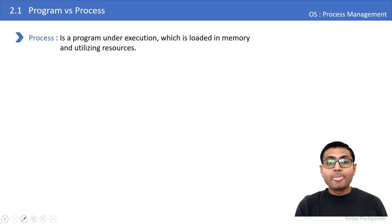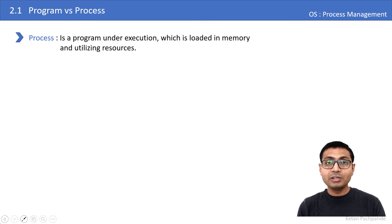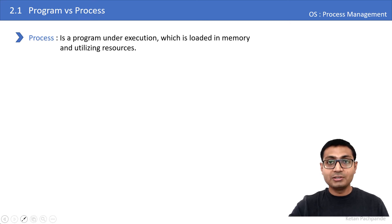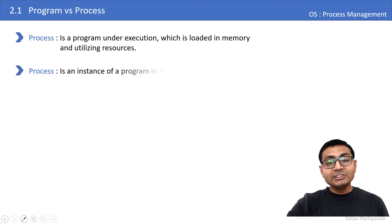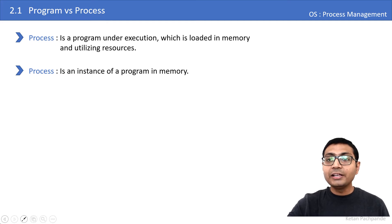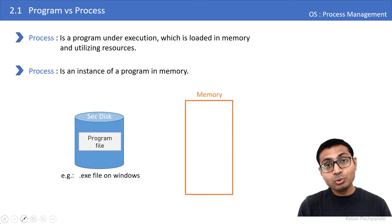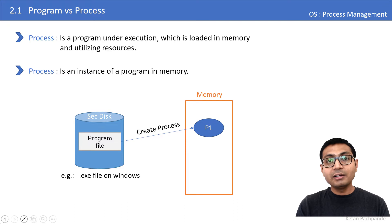A process is the program which is under execution and which is loaded in memory. Once it is loaded in memory, these instructions are going to be executed by the CPU, and the process is going to utilize operating system resources. A process is also known as an instance of a program — a dead program on secondary disk becomes active when it comes into memory. When the user double-clicks the program or runs it using command line, a process is created in memory.